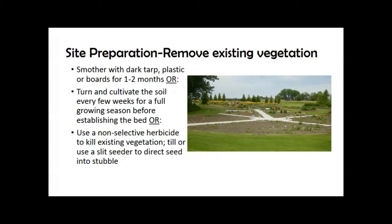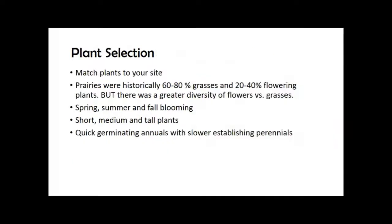For site preparation, if you're putting the garden into an area with existing vegetation, there are a few options. For a small area, you can smother vegetation with a dark tarp, plastic, or boards for a couple of months to kill everything. You can also turn and cultivate the soil every few weeks for a full growing season, though tilling brings up more weed seeds — so do it a full season ahead of time and don't till again right before planting.